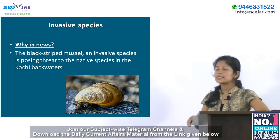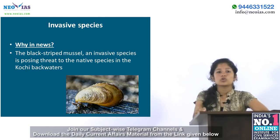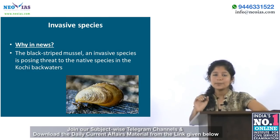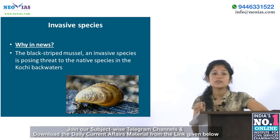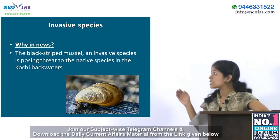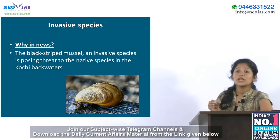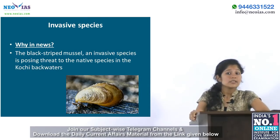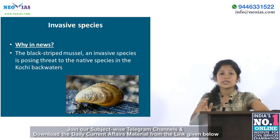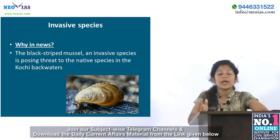Coming to the very first topic, that is about invasive species. An organism called blood stripped mussel, which is an invasive species, is posing a threat to the native species in the Kochi backwaters. The estimated population density of this invasive species in Vembanad Lake, which is in Kerala, was 748 per square meter.